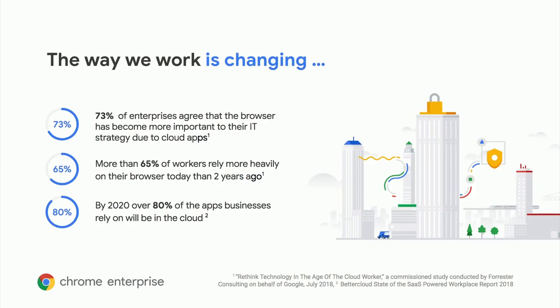Let's set the stage. Why are enterprises choosing to move to a modern browser? The way we work is changing, and the evolving role of the web in enterprises has a large part to play in this. More and more work is done on the web today, thanks to industry trends moving away from native client apps towards HTML5 standard web apps. The browser has become a core part of the business-critical application stack, and both IT admins and IT workers are seeing this shift firsthand.